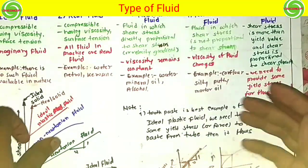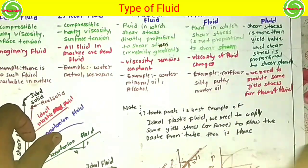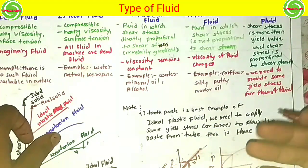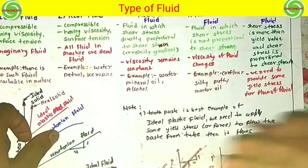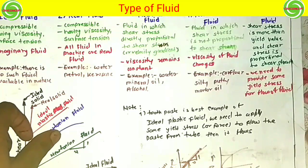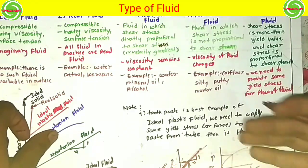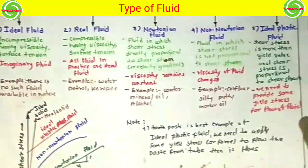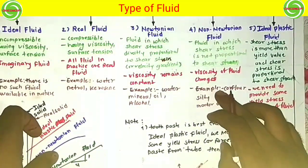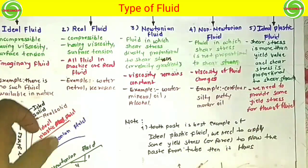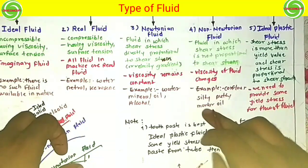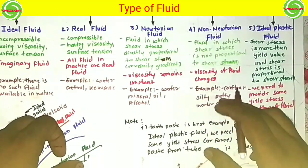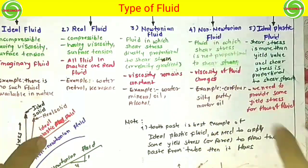In non-Newtonian fluid, the viscosity of the fluid changes when you apply shear strain. Because of this, the linear relationship cannot be maintained. The examples of non-Newtonian fluids are corn flour — when you add water to corn flour, its viscosity changes — silly putty, and motor oil. Motor oil is an example of a non-Newtonian fluid.